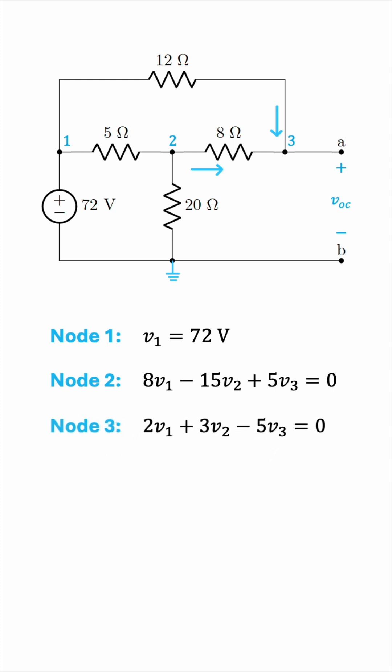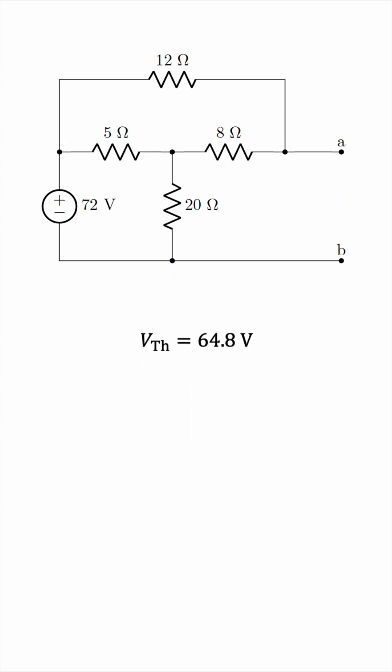So we now have a system of equations, three equations, three unknowns. Technically we have two unknowns, because V1 is explicitly spelled out to be 72 volts. So solving the two equations from node 2 and node 3, we get the values for V2 and V3. Now we're only interested in V3, remember, because this is the open circuit voltage. V3 works out to be 64.8 volts, so this is the open circuit voltage and the Thevenin voltage that we're aiming to get. So VTh is 64.8 volts.